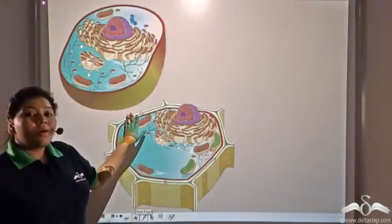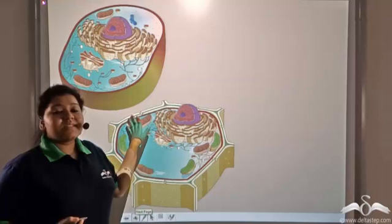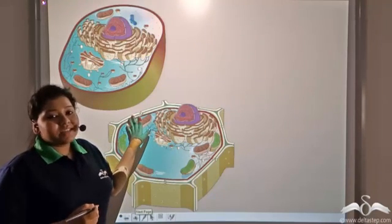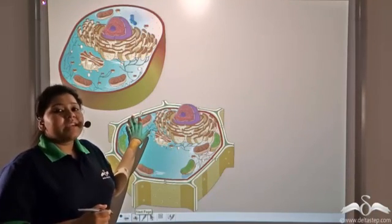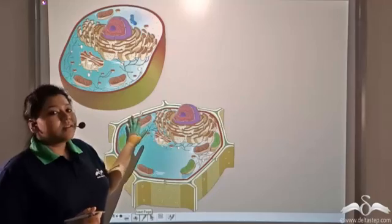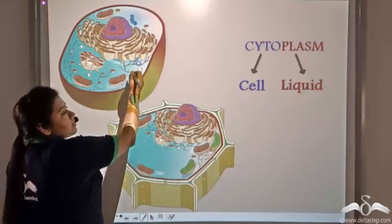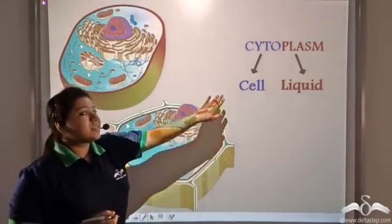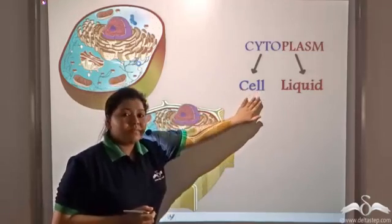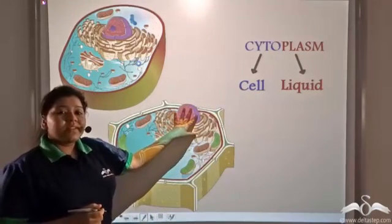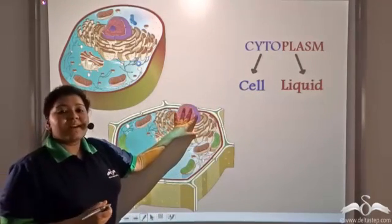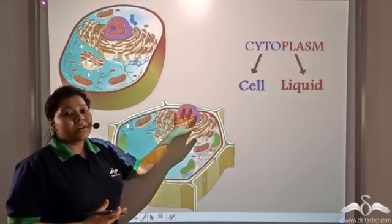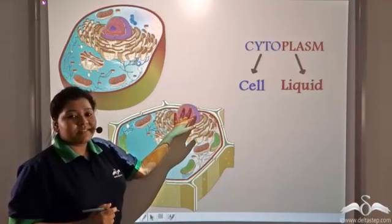Similarly, all the cell structures present inside the cell, which are known as organelles, are embedded in a fluid which is known as the cytoplasm. Cyto means the cell and plasm means liquid. So cytoplasm is the cell liquid in which all the cellular organelles are embedded.